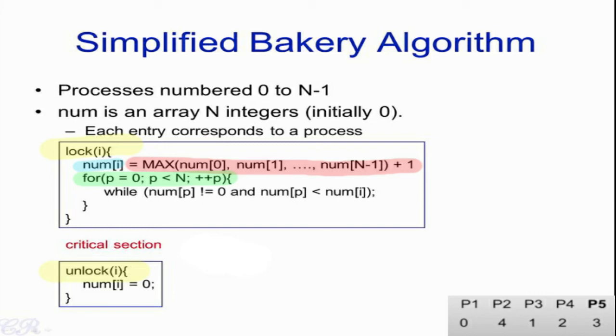Num[p] cannot be greater than num[i], which means you have to go in order from least to greatest, because that's how the Bakery Algorithm works.